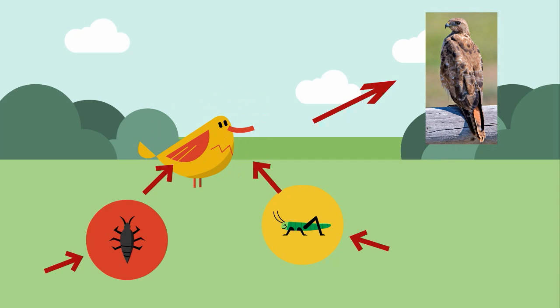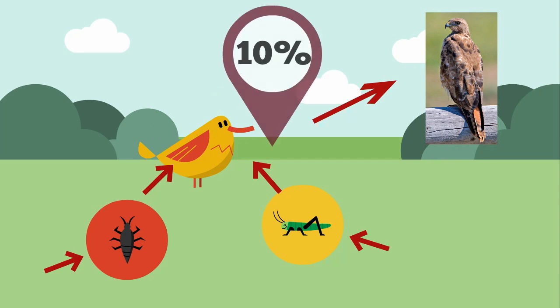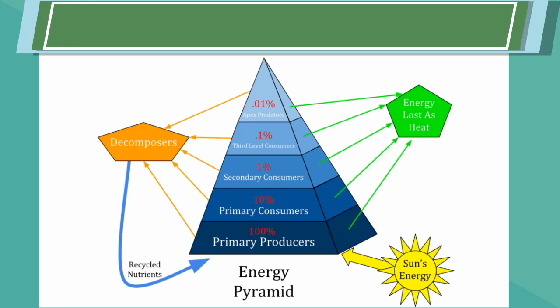Each time you move from one trophic level to another, only 10% of the energy is transferred to the next level. This is often referred to as the 10% rule. This explains why, as you move up trophic levels, there are fewer individuals at each level.